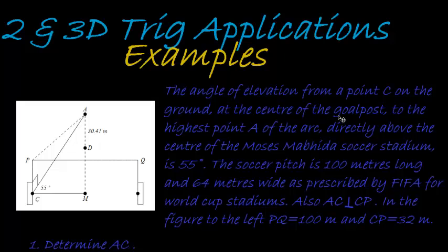At the center of the goal post to the highest point A of the arc. So there's point C, this is a goal post, it's looking at the highest point A of an arc, directly above the center of the Moses Mabida soccer stadium. So this is apparently a soccer stadium, there's the goal post, someone is standing there looking at the arc. There's an arc over this Moses Mabida soccer stadium and the center, the highest point of that arc is exactly in the middle of the soccer field. And this angle of elevation is 55 degrees, very easy from the sketch.